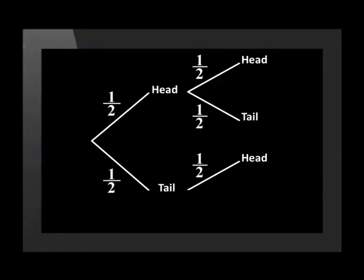If we get a tail in the first toss, there is a possibility that the second toss will also give us a tail. The probability for each toss is half.